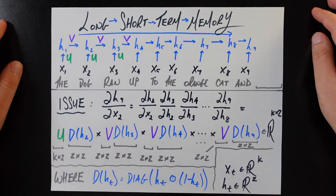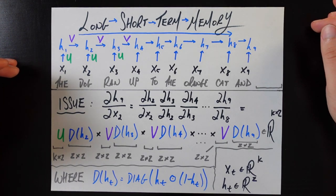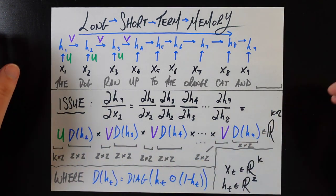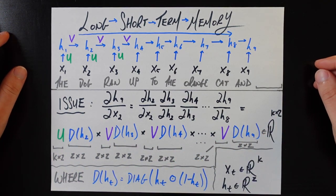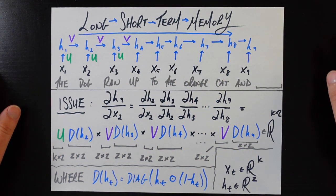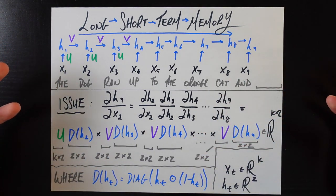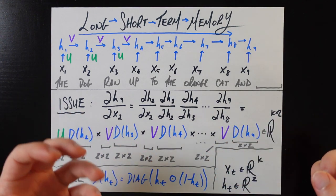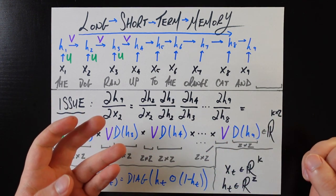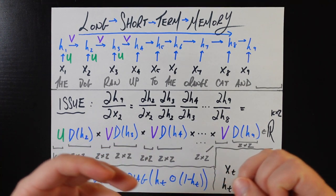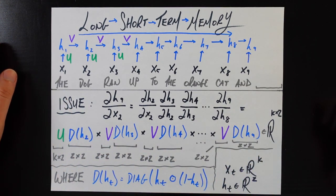We have a whole video on the vanishing gradient problem linked in the description below, but in that video we kind of just said that this problem affects RNNs without really explaining why or proving how. That's exactly where our story begins in this video. We're going to be introducing an extension called long short-term memory, which is a more complicated form of the recurrent neural network. Anytime we complicate things, the biggest question we should ask is why? What are we gaining by making this harder to understand, more complex, and probably more computationally expensive to train?